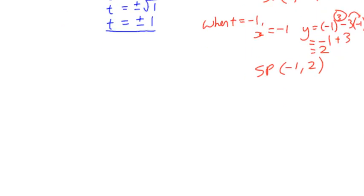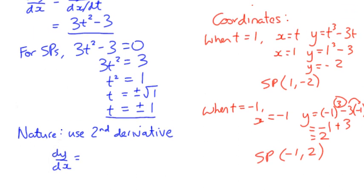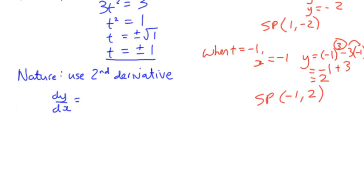So we're going to use the second derivative to find the nature. Because we can. We worked out that dy/dx is 3t² - 3.